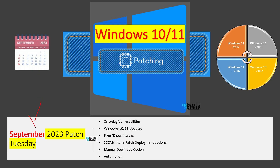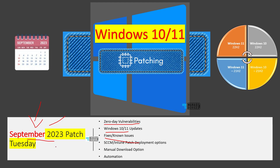Let's talk about September 2023 Patch Tuesday. This is a quick review of zero-day vulnerabilities, Windows 10 and 11 updates, fixes, known issues, improvements, and new features introduced with September 2023 Patch Tuesday. There will be two patches for Windows 11 21H2 and 22H2, and one particular patch for Windows 10. We will see all those details and then look into automatic deployment using device management tools such as SCCM and Intune, and also discuss manual options to download patches and automation such as Autopatch.